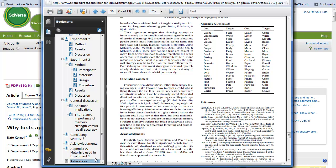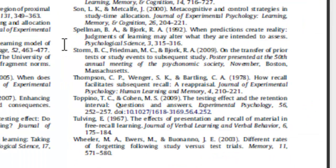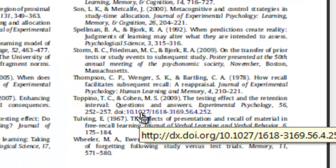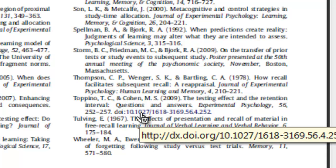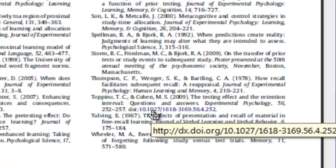Going to the references section of the article, I know I would like to see the article by Dr. Topino. When I find that article, I can see that the DOI is actually a clickable link. My cursor turns into a hand. I click the DOI and the article by Dr. Topino opens.